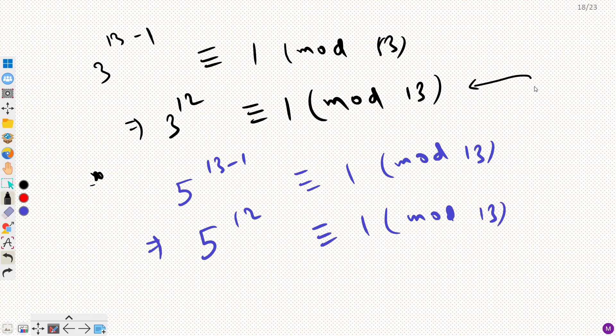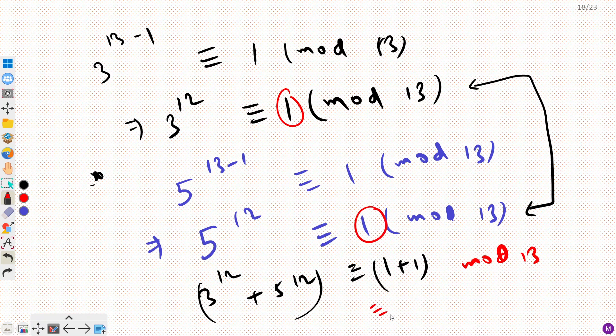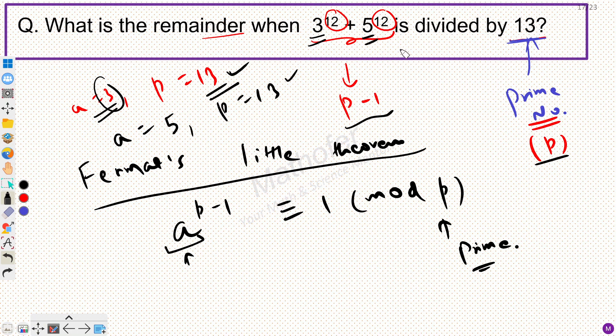Now if I add these two, then can I say that 3 raised power 12 plus 5 raised power 12 is congruent to 1 plus 1, so these two would be added, and modulo 13? We can say that it's congruent to 2 mod 13. So in other words, when I divide 3 raised power 12 plus 5 raised power 12 by 13, we get 2 as my remainder. So our answer is 2 for this question.